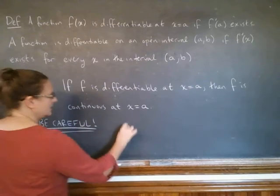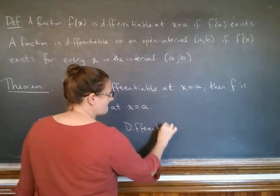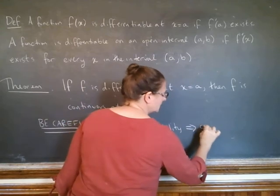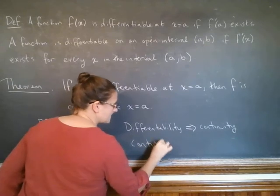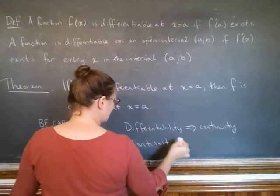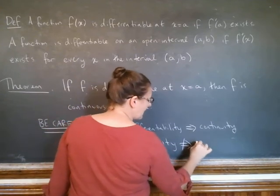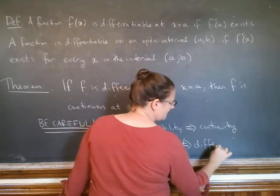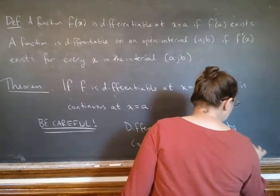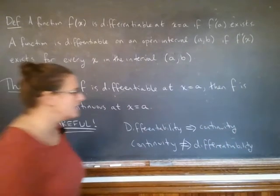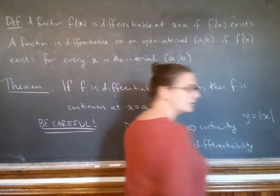In other words, differentiability implies continuity. Continuity does not imply differentiability. And our example of that is anything with a cusp or a corner. So y equals absolute value of x is the one we actually worked out in detail.